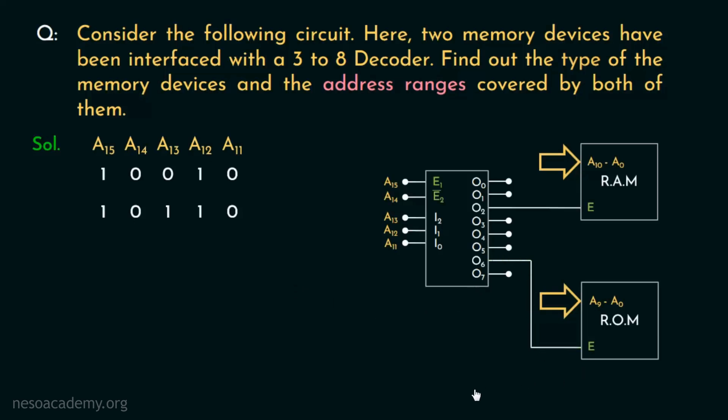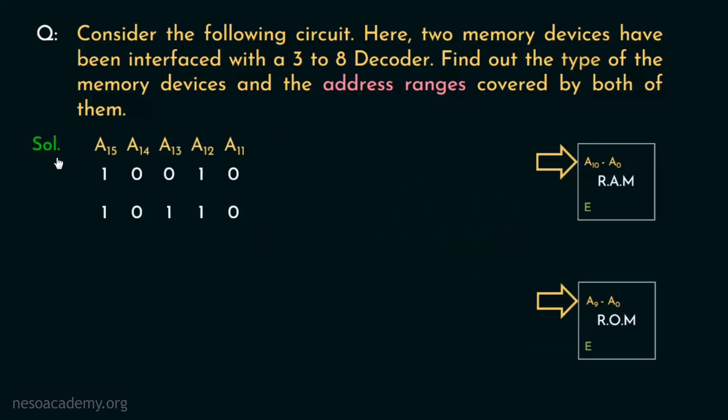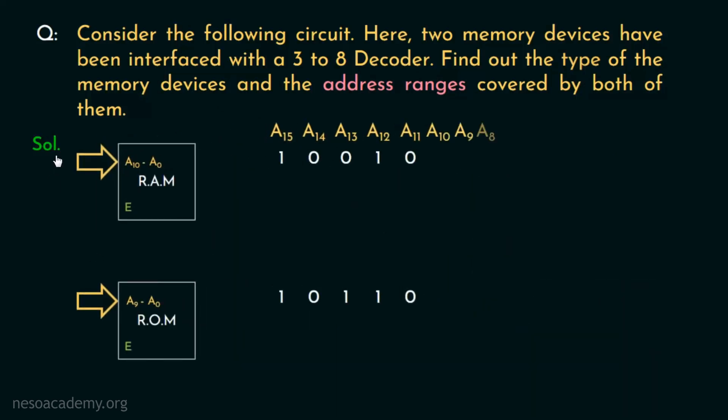Alright, since we have determined the appropriate input sequences for both the RAM and the ROM respectively, now let's figure out the address ranges covered by them one by one, shall we?